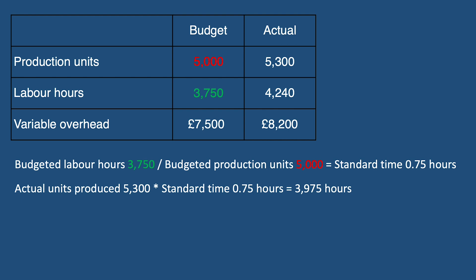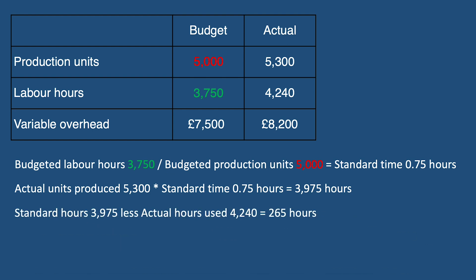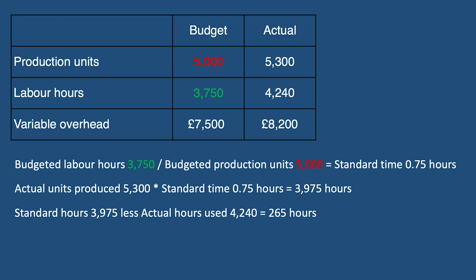The next step is to compare this to the actual hours used of 4,240, and we can now calculate the difference between the two, which gives us 265 hours. The last step is to convert this to a monetary value. We do this by multiplying the 265 hours by the standard variable overhead cost per hour, which we calculated during the expenditure variance to be £2. This gives us a variable overhead efficiency variance of £530, and because we used more hours than expected for the number of units produced, this would mean that it's adverse.